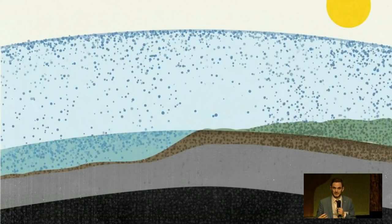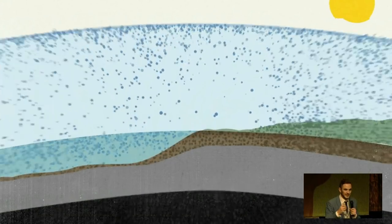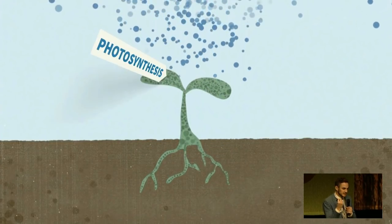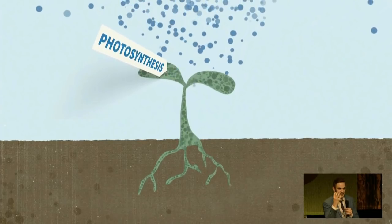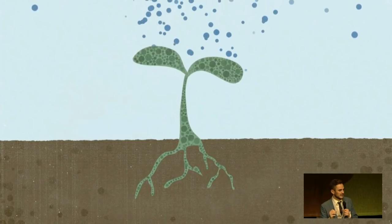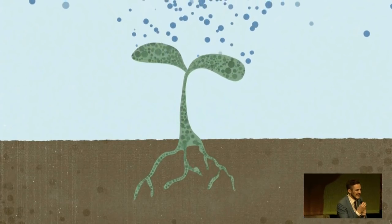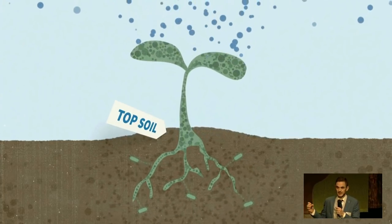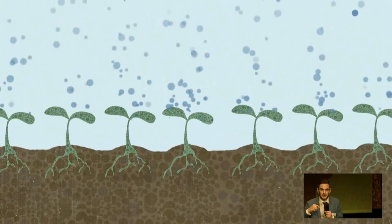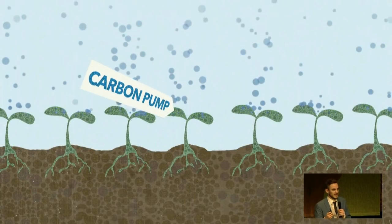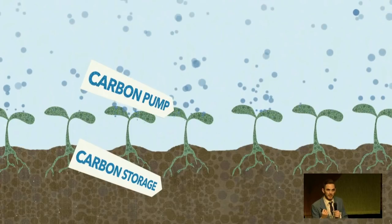Plants govern the carbon cycle. When we look at individual plants, what's happening is they're photosynthesizing — this process draws carbon into the plant, and that carbon is then converted into carbohydrates within the cells. Ultimately, a lot of the carbon gets sucked down towards the roots, where it feeds thousands and thousands of microorganisms that live in the soil. This process literally forms the soil, and this soil stores a huge amount of carbon. So really, the plants are the carbon pump, and the soil is where a lot of the carbon is stored.